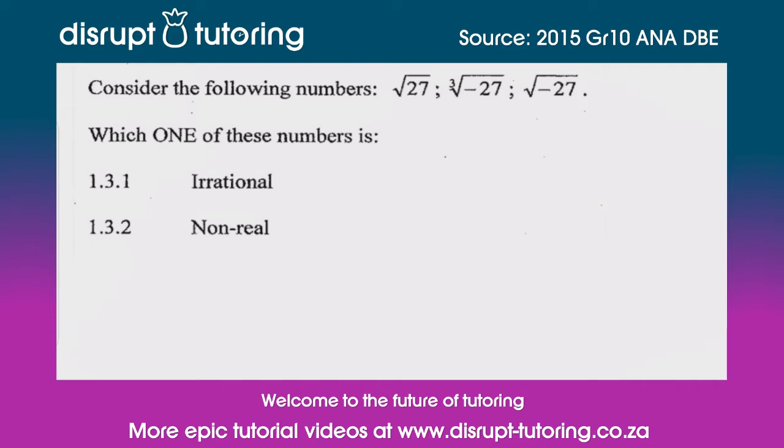They've asked which one of these is an irrational number. So what is an irrational number? In the context of these numbers, an irrational number would be a number that is not a perfect square but is being square rooted. We can see that 27 is not a perfect square.